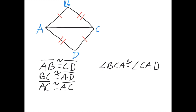Next, we need to do the next two angles. Which angle is respective to BC? It's this one over here — angle BAC. So, angle BAC is congruent to the angle respective to this side, which is angle ACD.